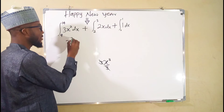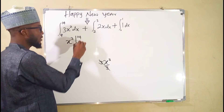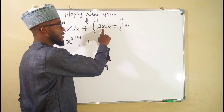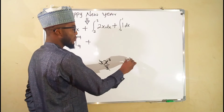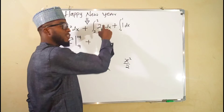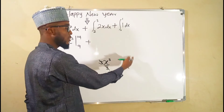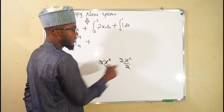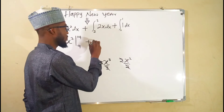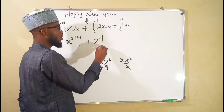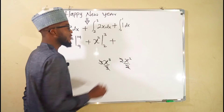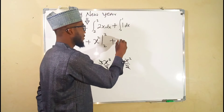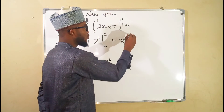We have x to the third power with boundaries from 9 to 14. Plus, if you integrate x, you are going to obtain x to the second power divided by 2. We already have a 2 here so they cancel out, leaving x to the second power with boundaries from 2 to 3. Plus the last one: if you have a constant, just multiply x by that constant — x times 1 is x — with boundaries from 0 to 1.